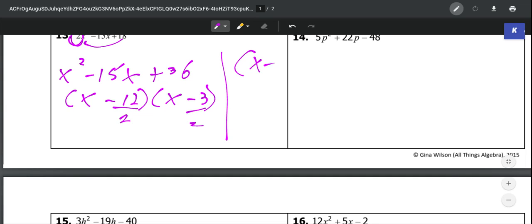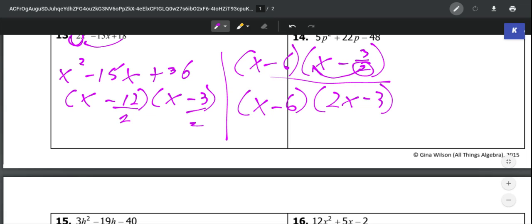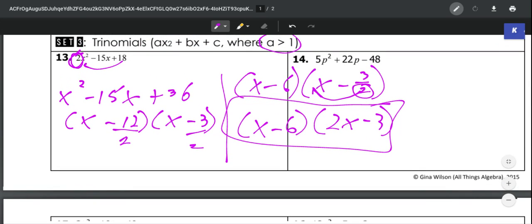So that's going to give us x minus, let's see 12 over 2 is 6, and then we've got x minus 3 over 2. Now the reason this is called bottoms up is because you take the bottom of this fraction and bring it up in front and this is actually written as x minus 6 and then 2x minus 3. And hopefully you guys have seen that before.